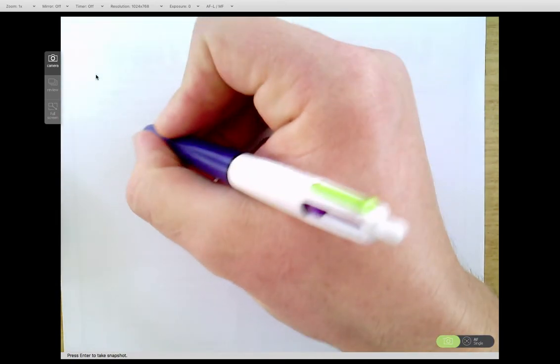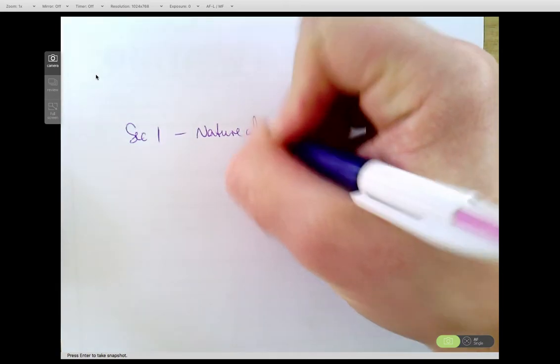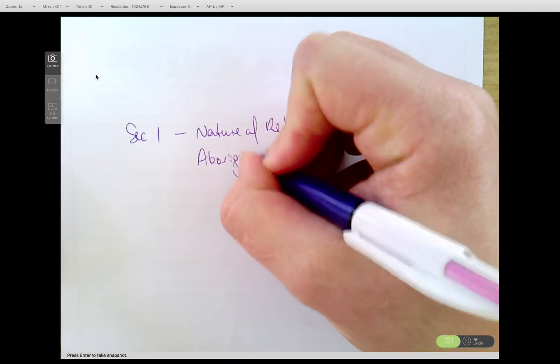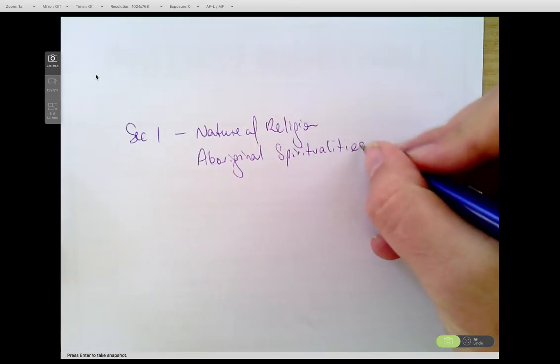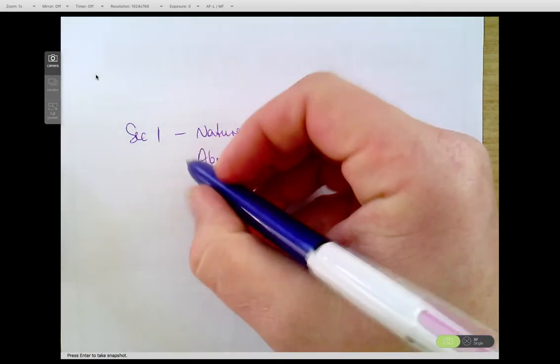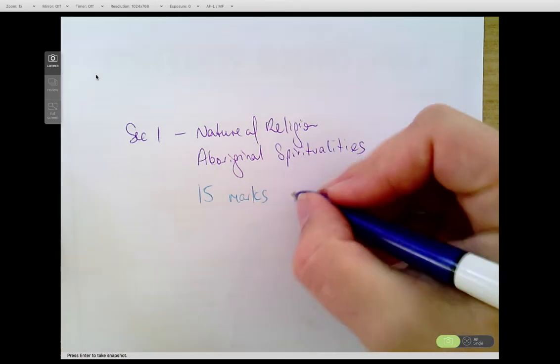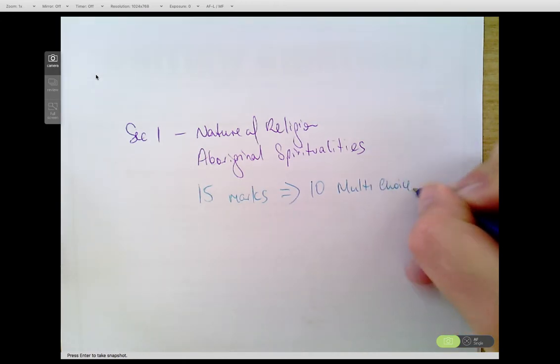Okay, so the format of the paper: you're going to have Section 1. Section 1 is going to be the topic Nature of Religion and Aboriginal Spiritualities, and it is worth 15 marks. That 15 marks is broken up into 10 multiple choice and one 5-mark response.